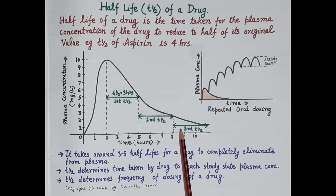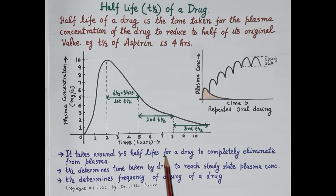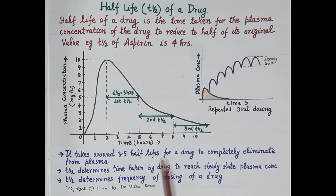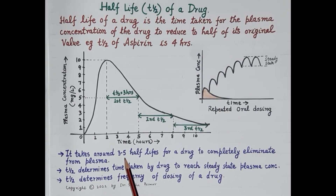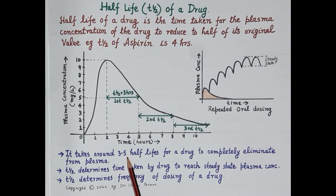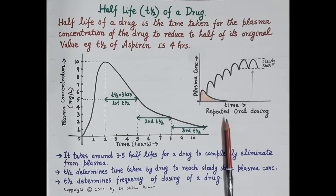So in this example, the half-life of the drug is three hours. It takes around three to five half-lives for a drug to get completely eliminated from the plasma — 95 percent of the drug is eliminated in three to five half-lives. Therefore, the concept of half-life is essential to determine the elimination of a drug from the body.